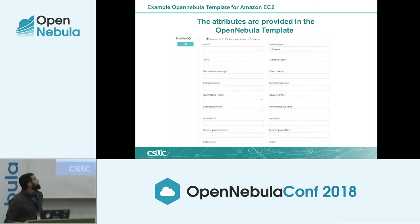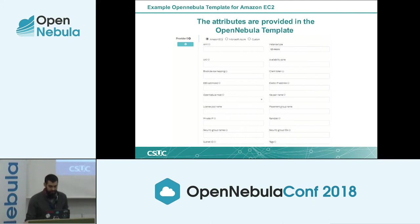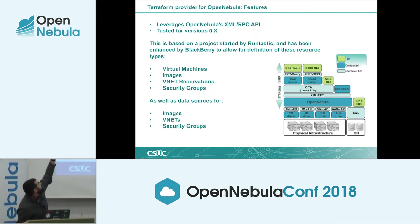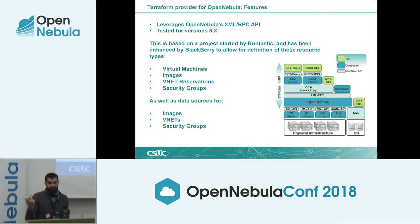As you can see here, you define the instance type in the OpenNebula template, and it's the same as in the Terraform code for the AWS provider. So for us it's simpler to do it through OpenNebula instead of learning each different Terraform provider.